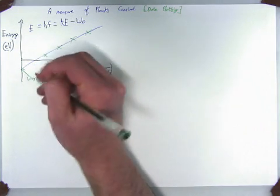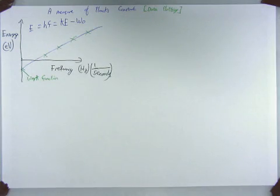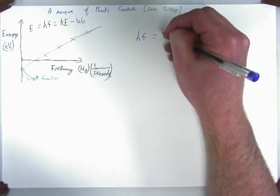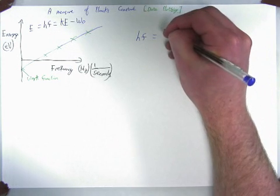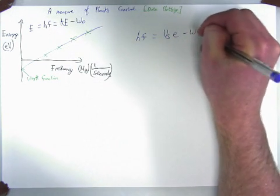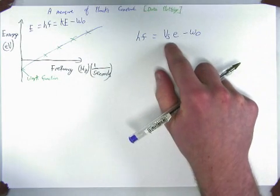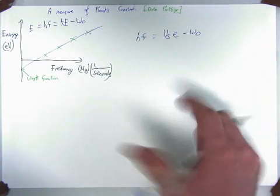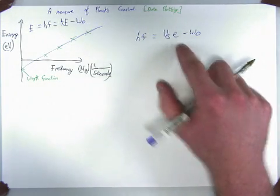So now, we have HF equals the voltage times the charge of the electron, minus the work function. It's the kinetic energy of the electron, it's the voltage applied through, times the charge of the electron.